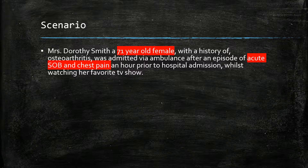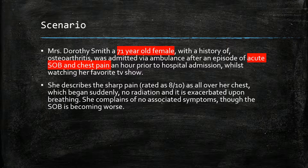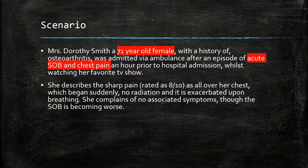She describes the pain as sharp, all over her chest, beginning suddenly, with no variation and made worse on breathing. She also complains that the shortness of breath is becoming worse. Here we would pause and think about the differentials of acute shortness of breath with chest pain, as this group of symptoms has a wide array of possible causes.